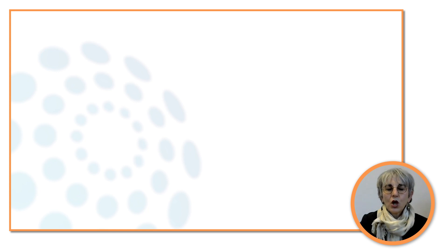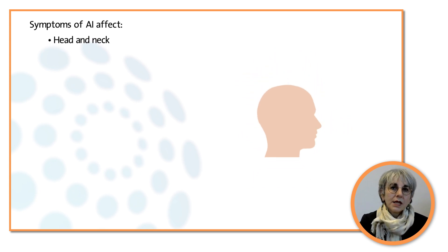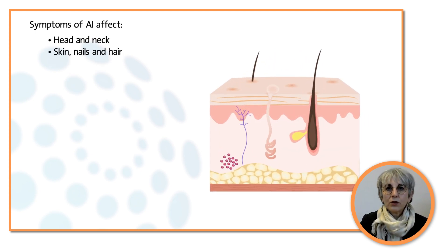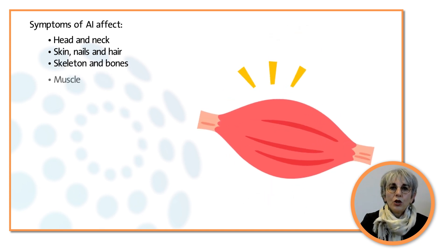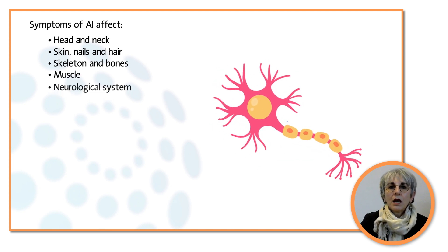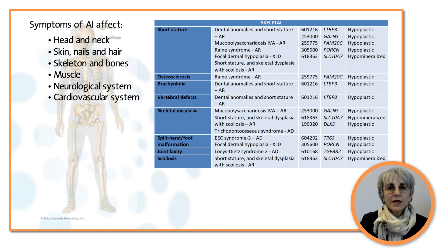Amelogenesis imperfecta can be described in isolation or associated with other symptoms in syndromes. These symptoms could affect the head and neck area, skin, nails, and hair as other ectodermal organs, skeleton and bones, muscle, neurological system, and cardiovascular system. Clinical diagnosis and identification of the genes involved are thus difficult to make and implement, leading patients and their families into diagnostic wandering.